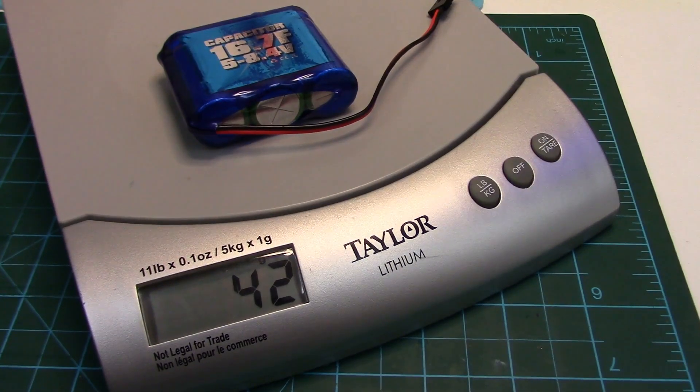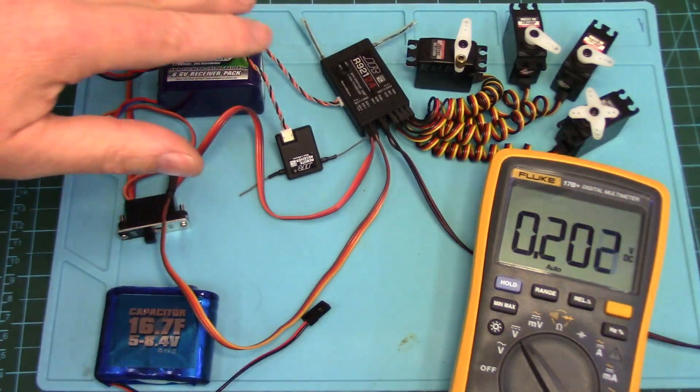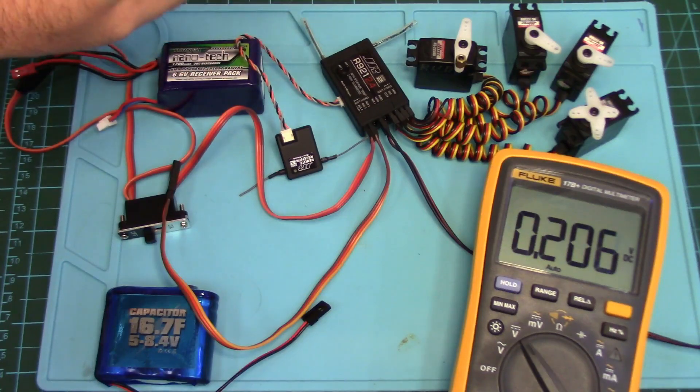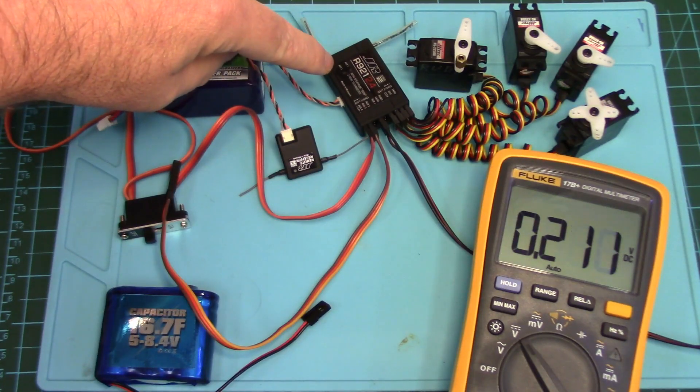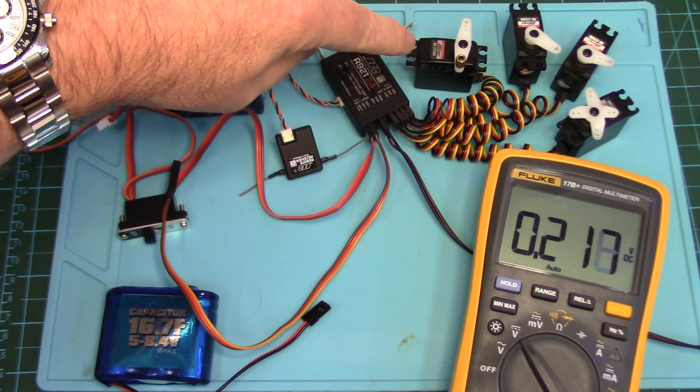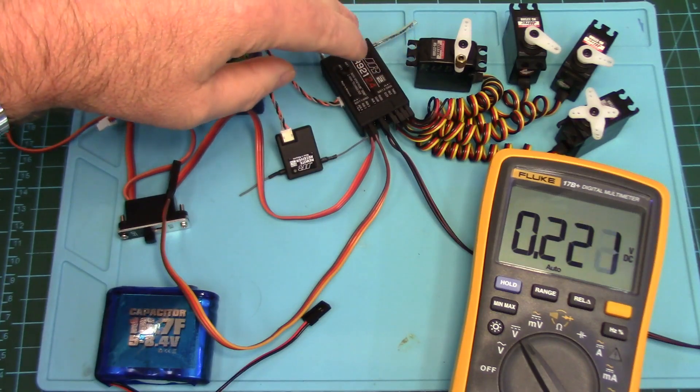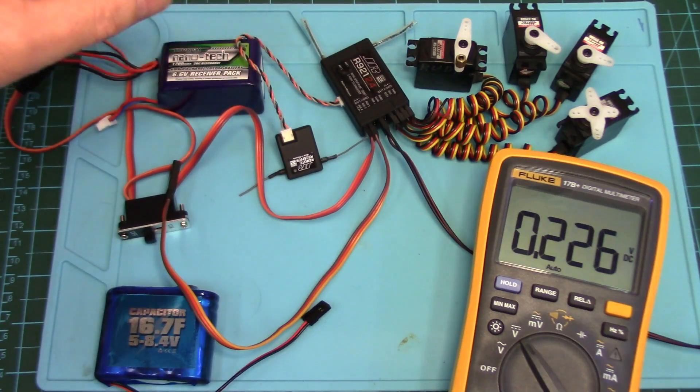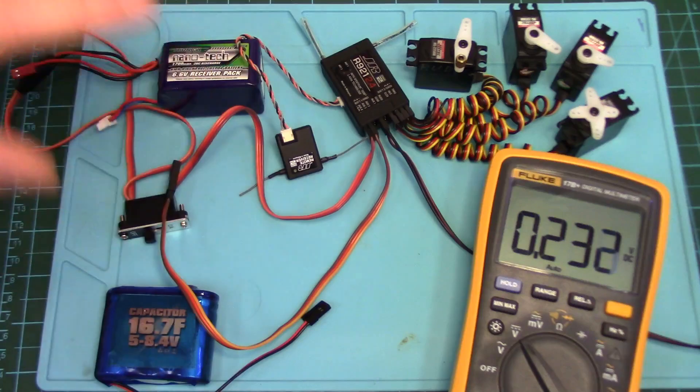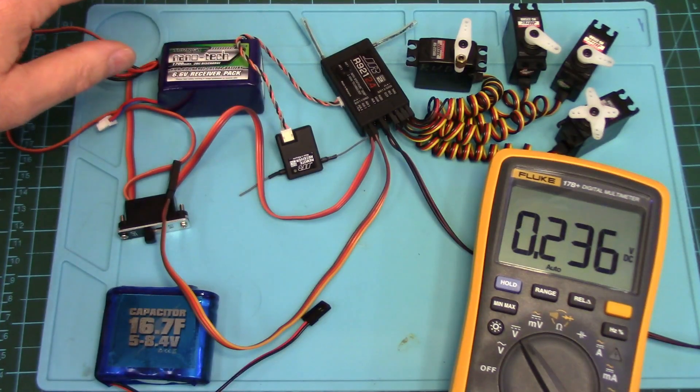Now let's hook it up. Just go over the setup here so you can understand what's going on. I've got my little receiver here. I've got four servos plugged into it, to the throttle, aileron, elevator, rudder channel, so as we stir the radio sticks we can get the servos moving and create maximum draw.